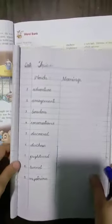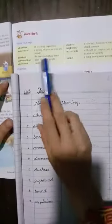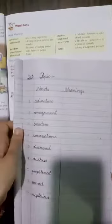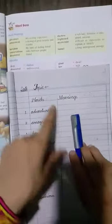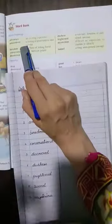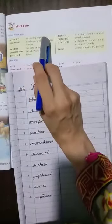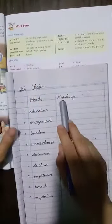You will have to copy down the words and the meanings from your textbook. In your textbook page number 23. On page number 23, words and meanings are given. Words and meanings. Words are given by black pen.